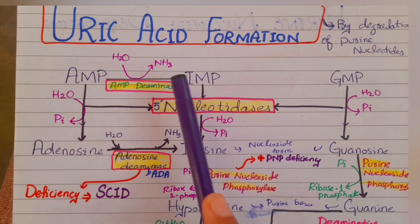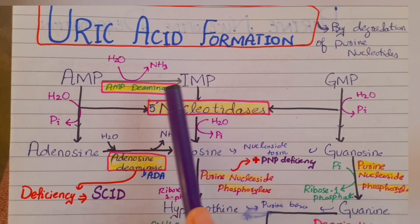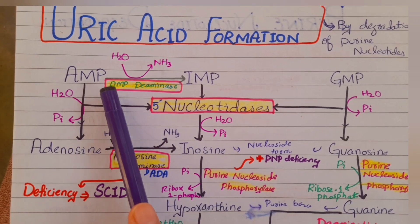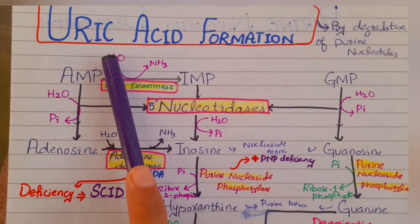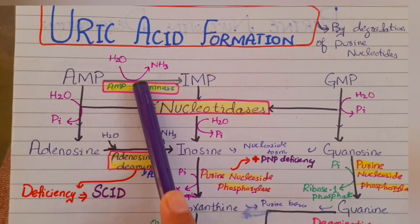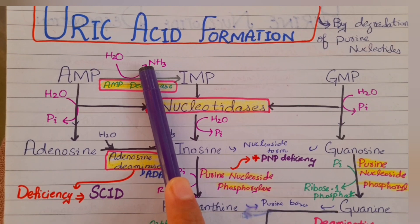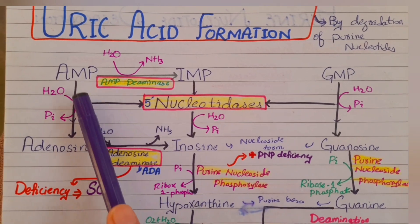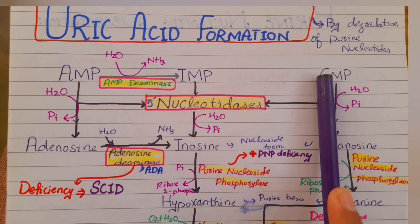In the first step, AMP will be converted to inosine monophosphate (IMP) in the presence of the enzyme AMP deaminase. In this step, water will be used and ammonia will be released.